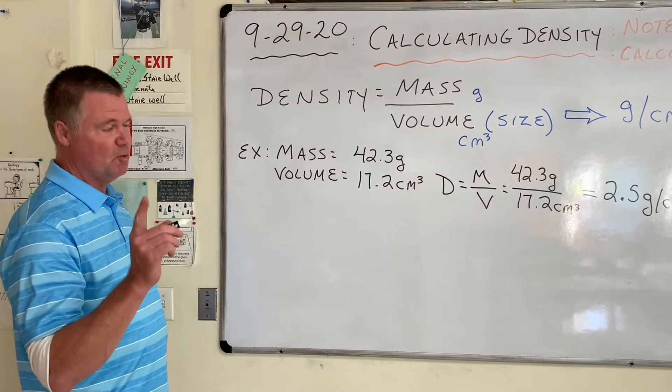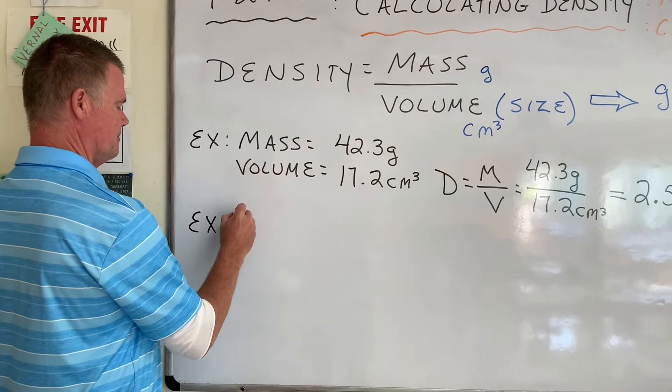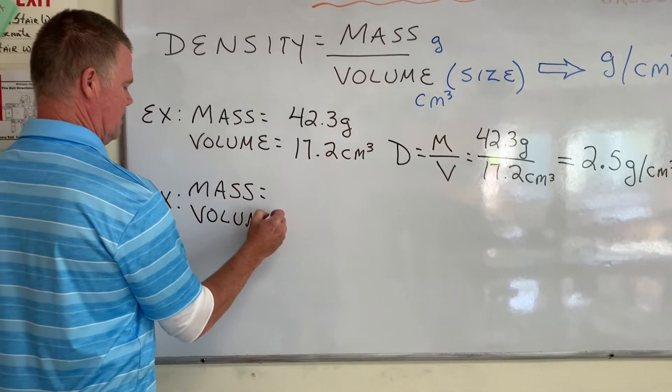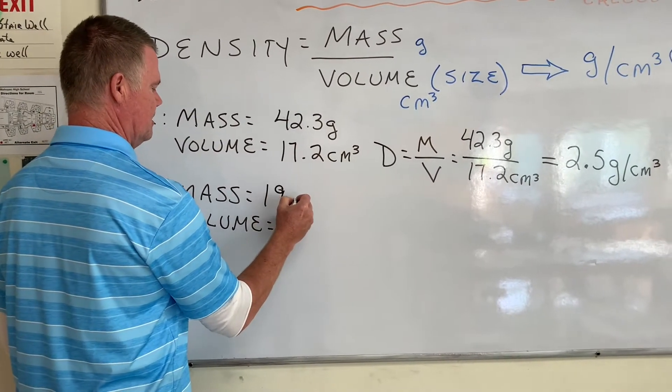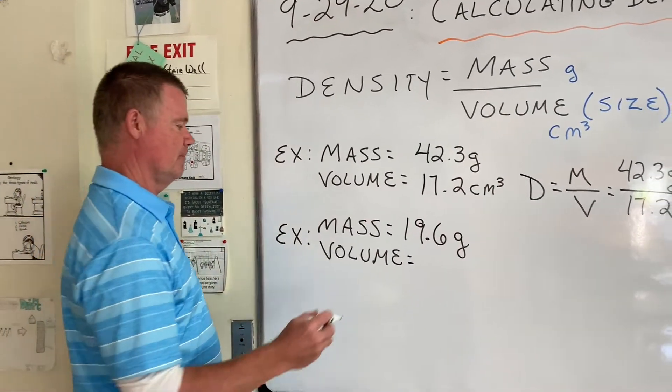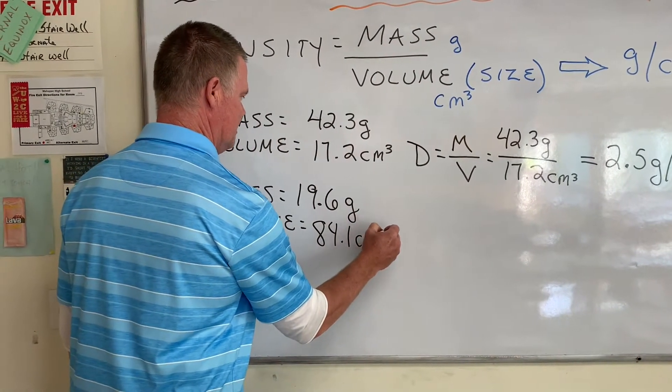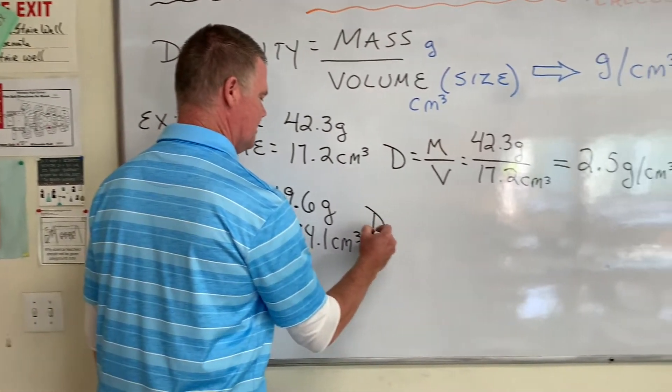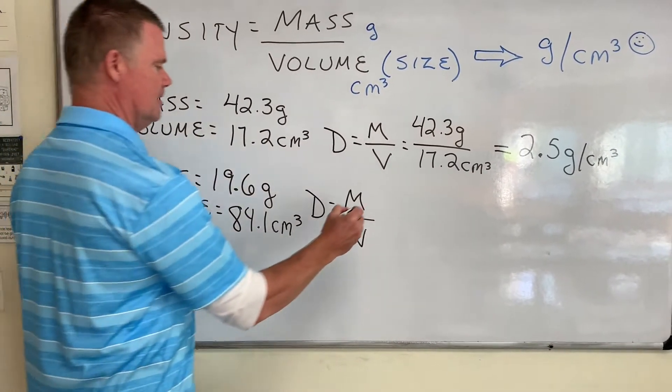Let's try another example, not only for practice, but you'll see why we're doing this example too. EX means we're just making up numbers for an example. We need a mass and we need a volume. In this case, we'll use a mass of 19.6 grams and a volume of 84.1 cubic centimeters.